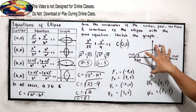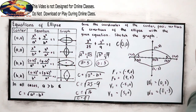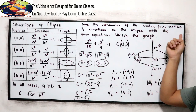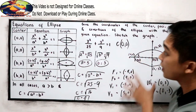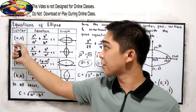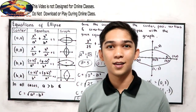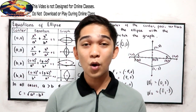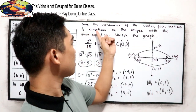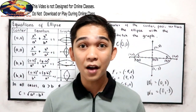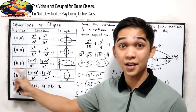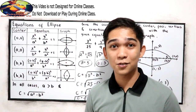And this is the graph. That's how to find the center, foci, vertices, and co-vertices, and how to sketch the graph given an equation with center at (0, 0). In our next video, we will cover how to find those values and graph when the center is at (h, k). Stay tuned for our next video.